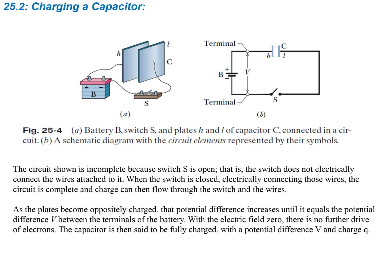The circuit shown is incomplete because the switch S is open — that is, the switch does not electrically connect the wires that attach to it. In this chapter, we're going to start using this sort of form to show what circuits are. You have the battery shown with a double line, one longer than the other. The longer one is going to be the positive side, and the shorter one is going to be the negative side. A capacitor looks like two straight, even lines with some space in between them. A switch is generally shown in the open position like that, or in the closed position like this.